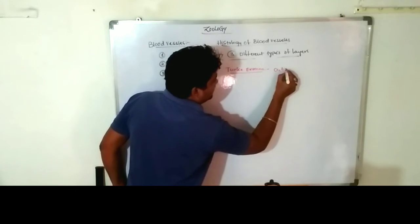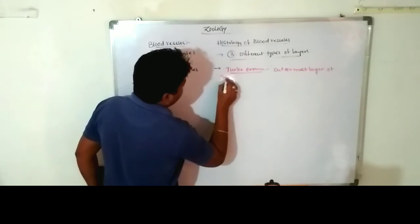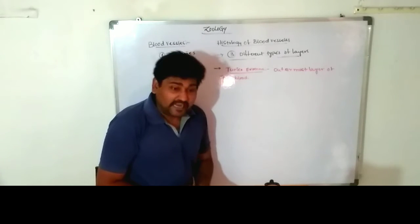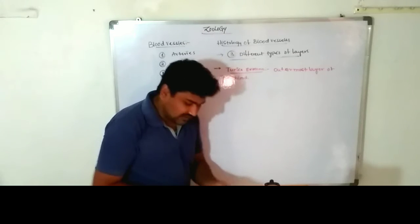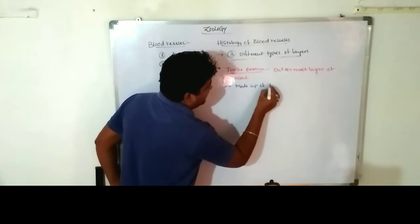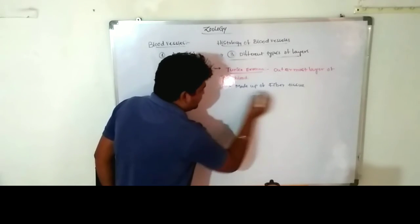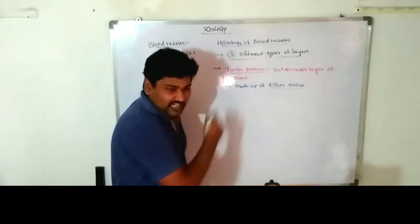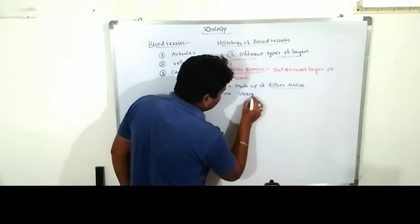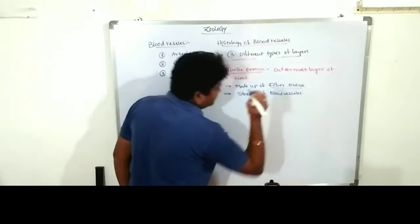The outermost layer of the blood vessel is known as tunica externa. It is made up of fibrous tissue. This fibrous tissue gives the blood vessel its strength.